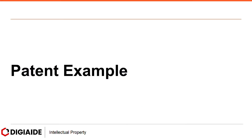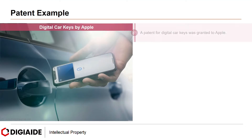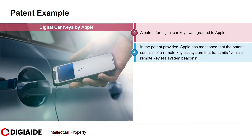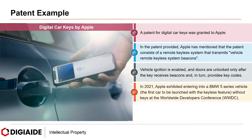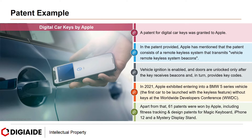And finally, let's look at some examples, starting with the first example for patents. A patent for digital car keys was granted to Apple recently. In the patent provided, Apple has mentioned that the patent consists of a remote keyless system that transmits vehicle remote keyless system beacons. Vehicle ignition is enabled and doors are unlocked only after the key receives beacons and provides key codes. In 2021, Apple exhibited entering into a BMW 5 Series vehicle — the first car to be launched with a keyless feature — without keys at the Worldwide Developers Conference. Apart from that, 61 patents were won by Apple, including fitness tracking and design patents for Magic Keyboard, iPhone 12 and a Mystery Display Stand.